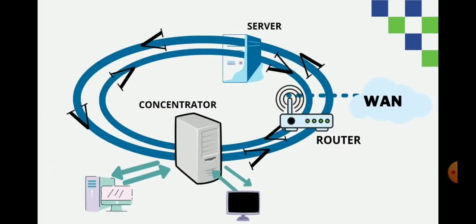This elaborated diagram builds on the previous figure. Where the first diagram showed nodes, this one describes what a node can be — it can be a server, a router, a concentrator, or anything. The key requirement is that two rings must be used, both routed in opposite directions.